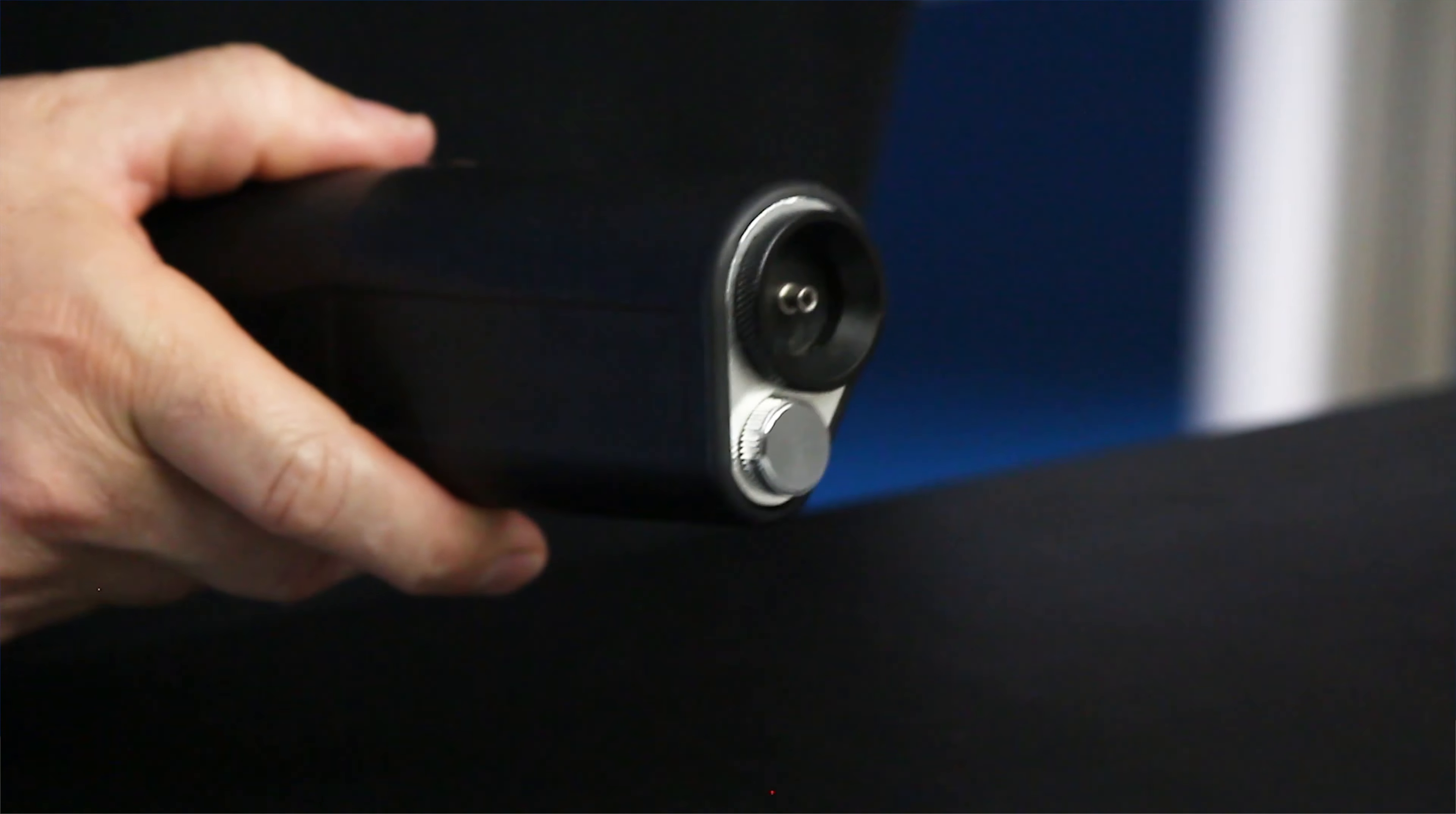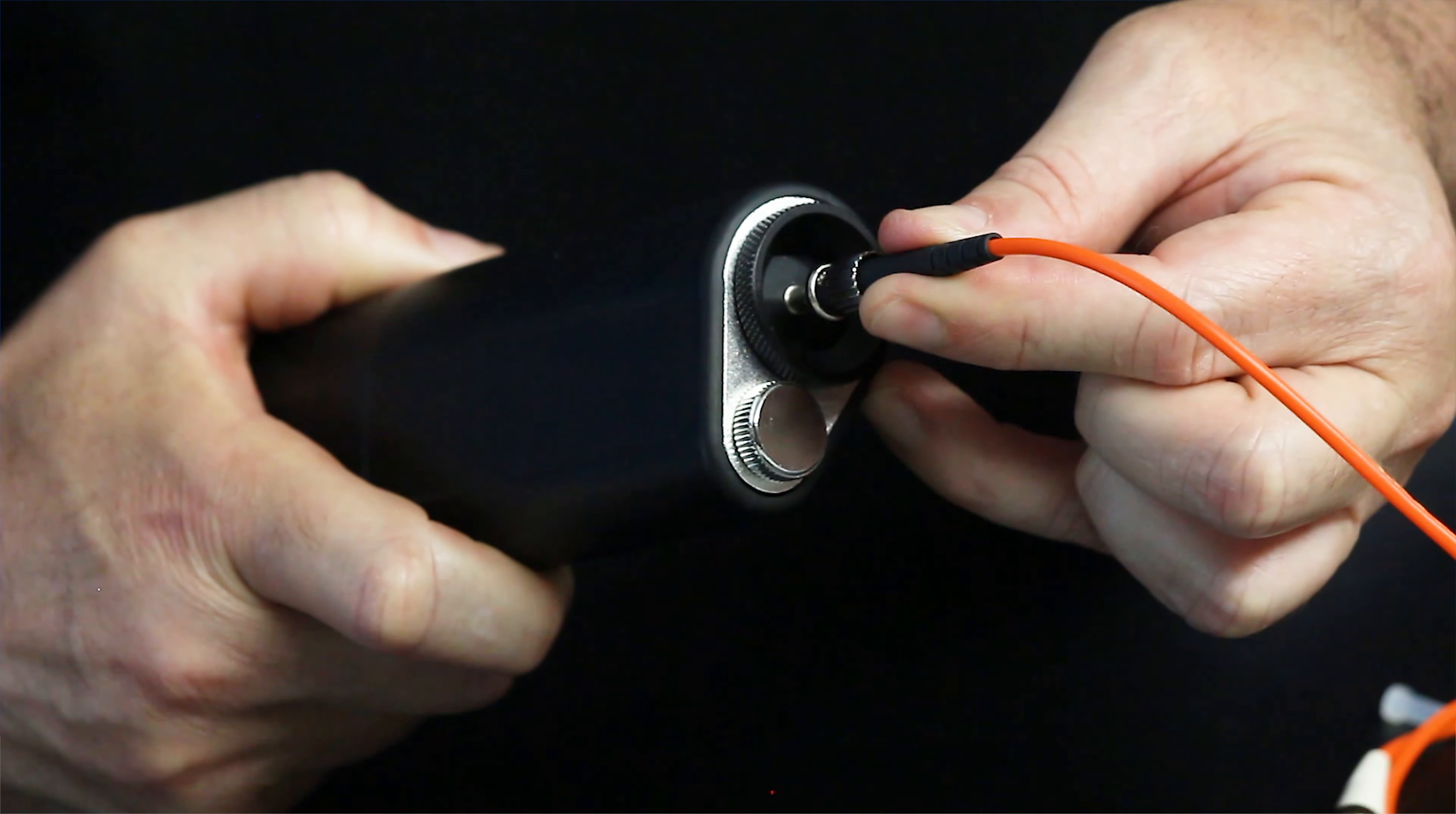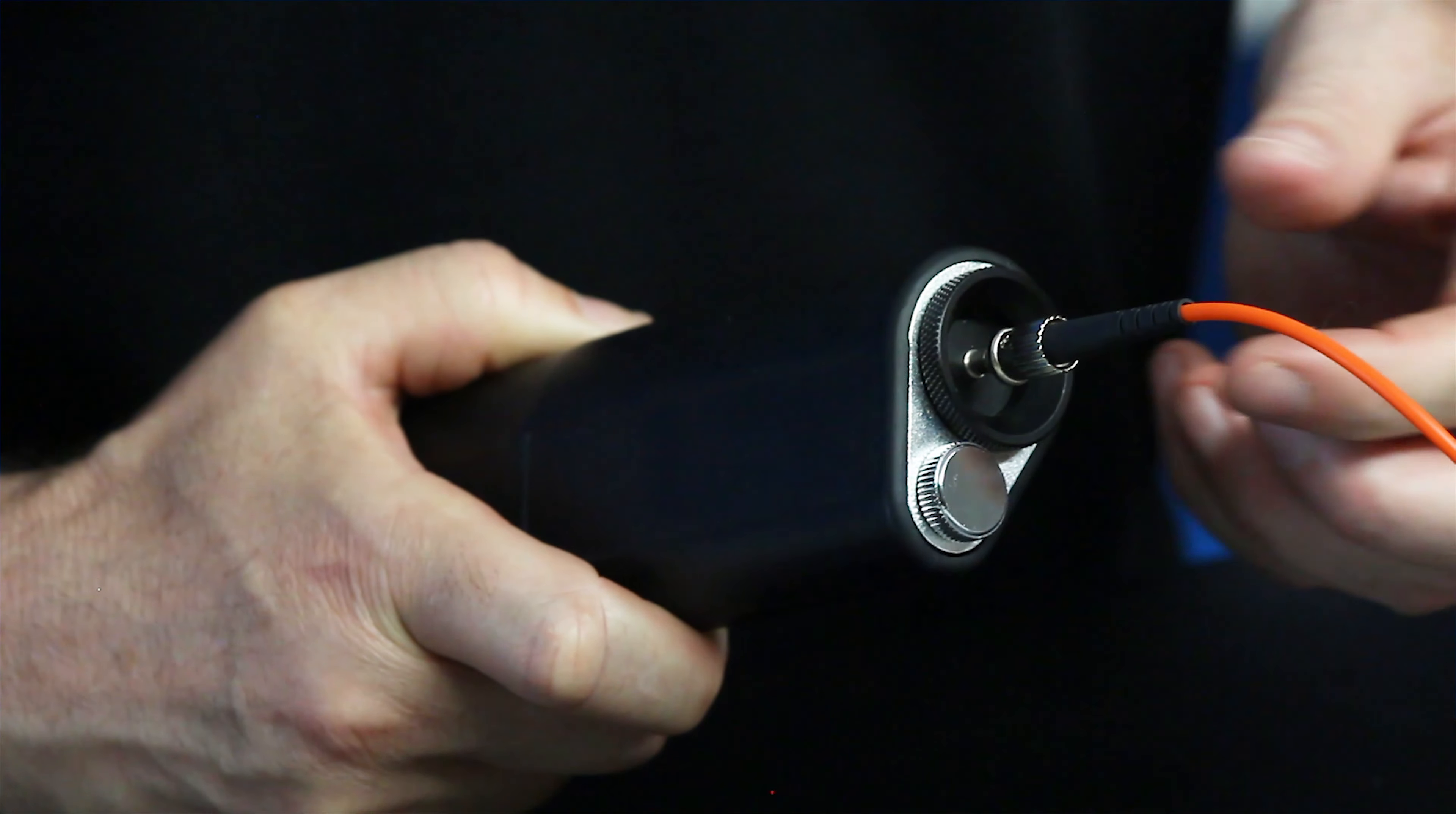And then you will take your cable assembly, because you're going to be looking at the end face of that, and you insert that into the 2.5 millimeter adapter. Now this unit also comes with a 1.25 millimeter adapter that you would screw off and insert if you're looking at LC connectors or MU connectors.